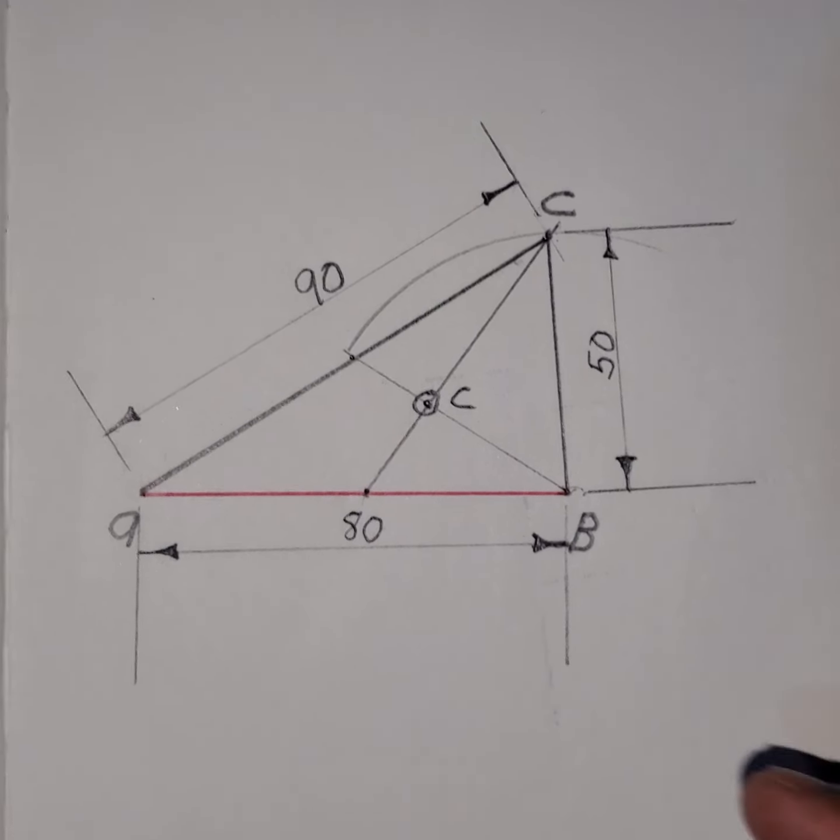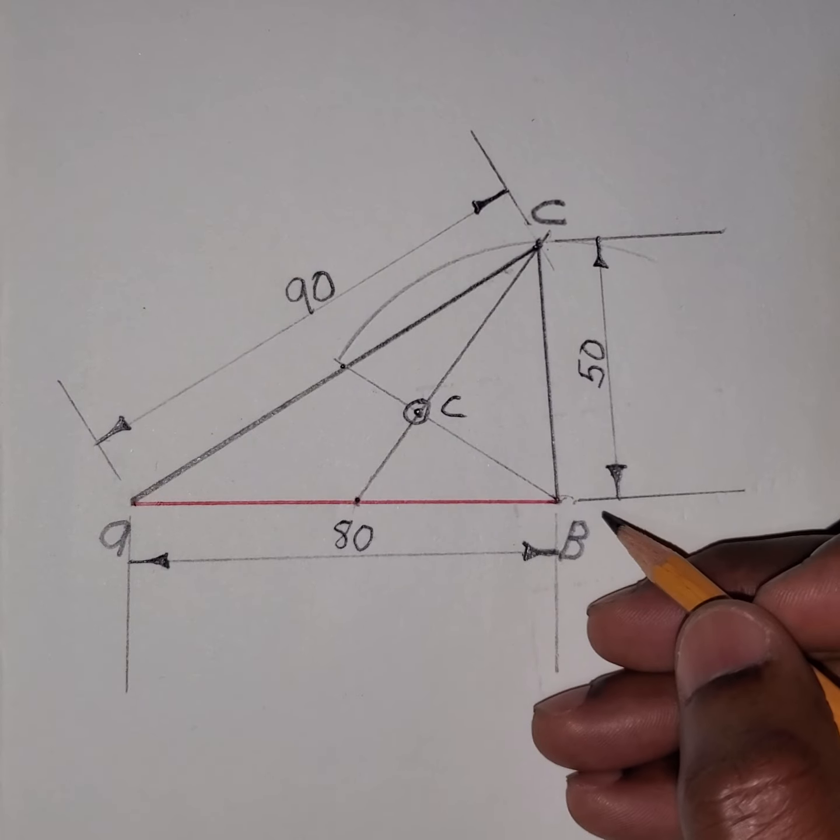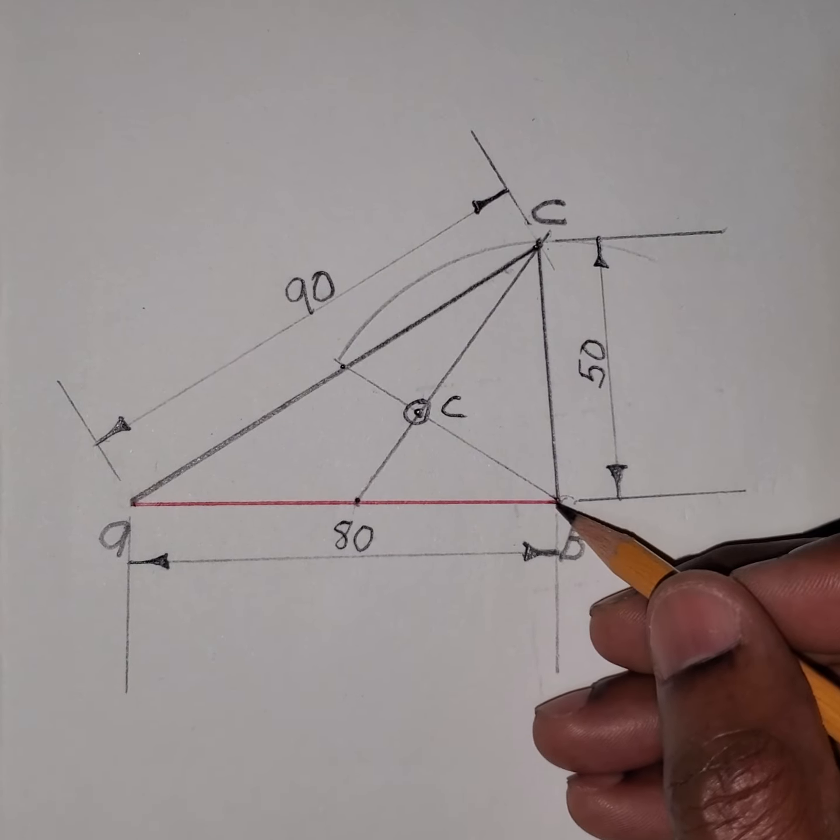Now to state where the centroid is located we would need to draw a horizontal line here. So let me use a different color for this.